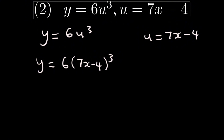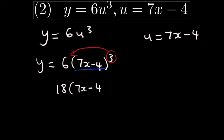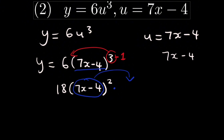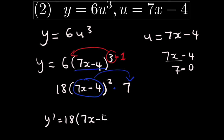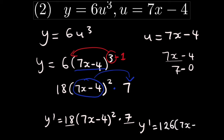Now from this part we will start our chain rule. You take the 3 and multiply it by 6 to get 18, then write this equation as it is and subtract 1 from the power to get 2. After that, you derive what's inside and multiply it outside. The derivative of 7x minus 4 is 7. So y dash equals 18(7x minus 4) squared multiplied by 7, giving us 126(7x minus 4) squared.